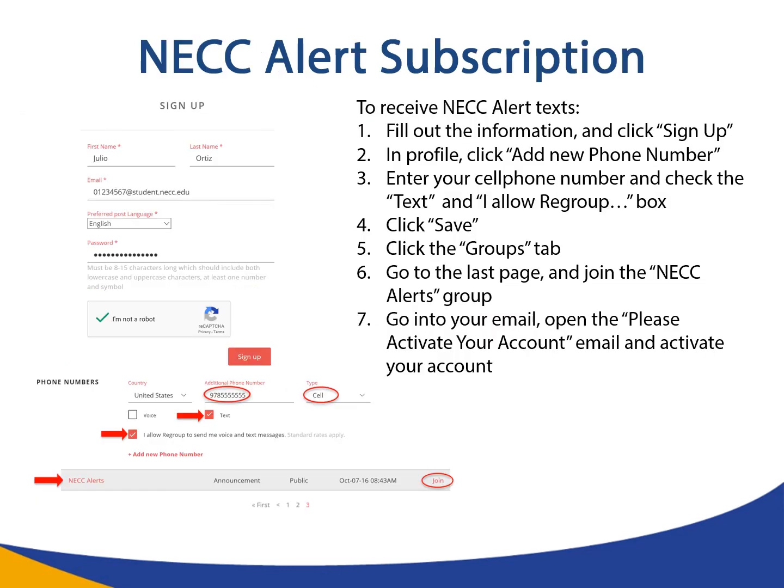NECC Alert subscription. To receive NECC alert texts: Step 1, fill out the information and click sign up. Step 2, in profile, click add new phone number. Step 3, enter your cell phone number and check the text and I allow regroup box. Step 4, click save. Step 5, click the groups tab. Step 6, go to the last page and join the NECC alerts group. Step 7, go into your email, open the please activate your account email, and activate your account.